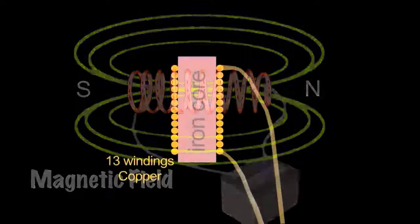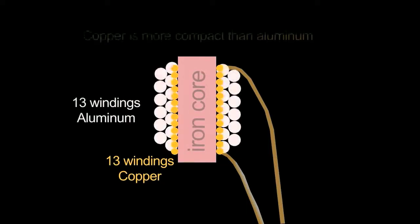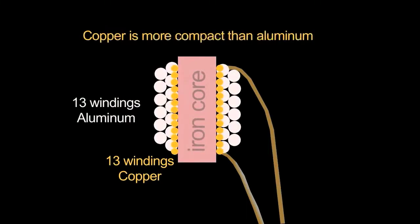Copper has such a good conductivity that a solenoid made of it can be more compact and can handle higher current loads.